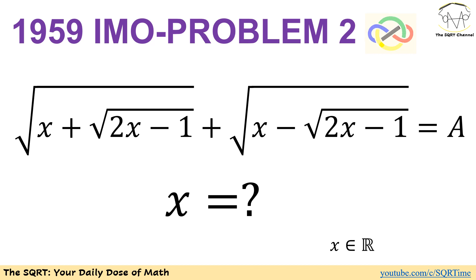Here in this problem we have radical x plus radical 2x minus 1 plus radical x minus radical 2x minus 1 is equal to A.